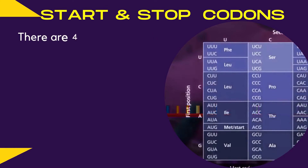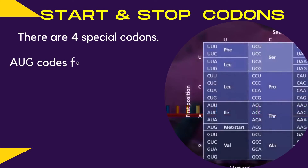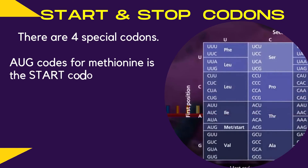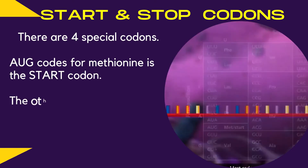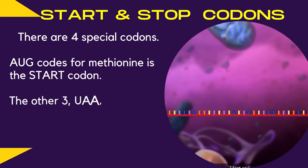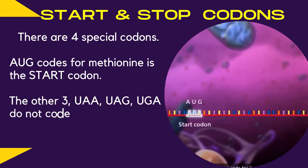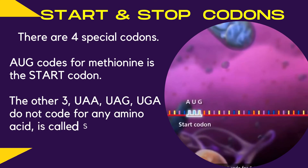There are 4 special codons. First, AUG codes for methionine and is the start codon. The other three — UAA, UAG, and UGA — do not code for any amino acid; they are called stop codons.